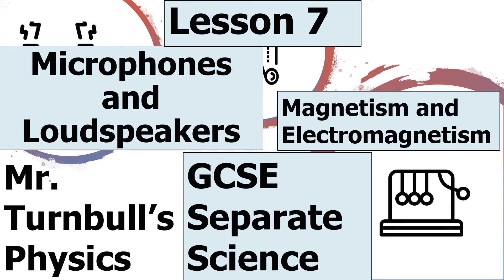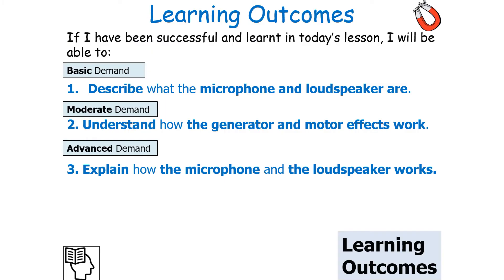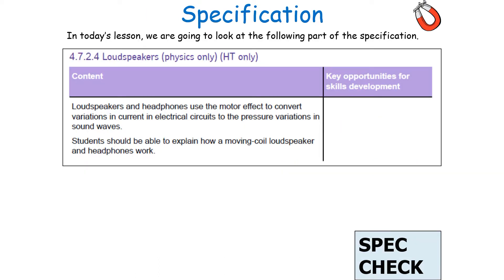Hello and welcome to today's lesson on microphones and loudspeakers, which is part of the magnetism and electromagnetism topic in GCSE Separate Science Physics. In today's lesson we're going to look at describing how a microphone and a loudspeaker work. If we've been successful, we should be able to describe what the microphone and loudspeaker are, understand how the generator and motor effects work, and explain how each device works.